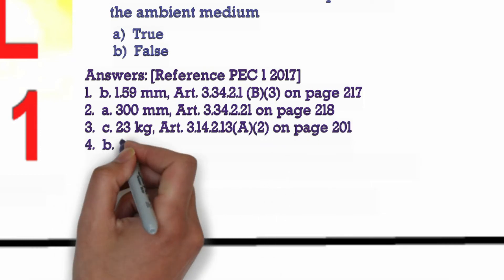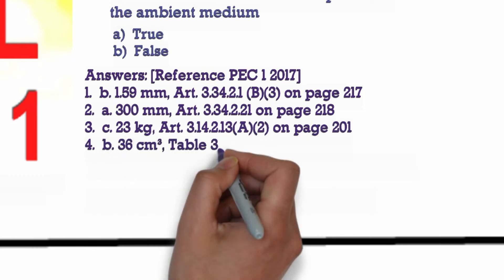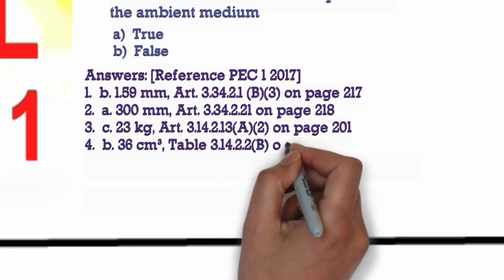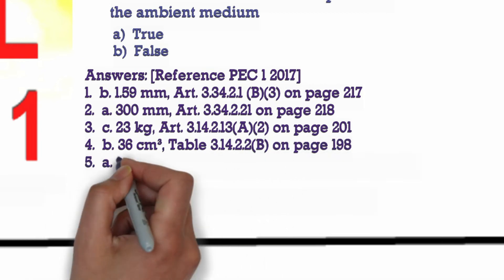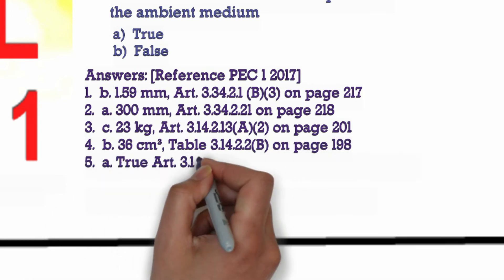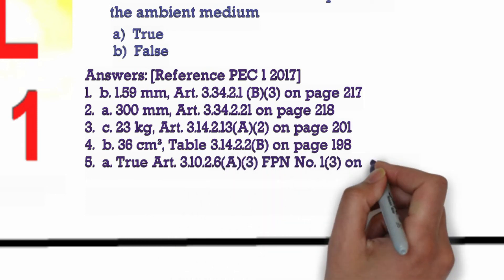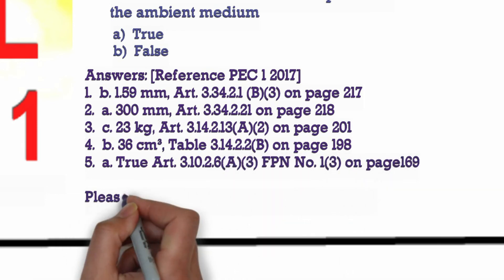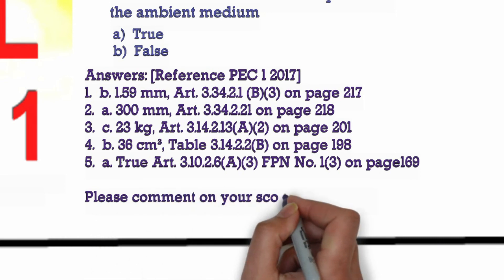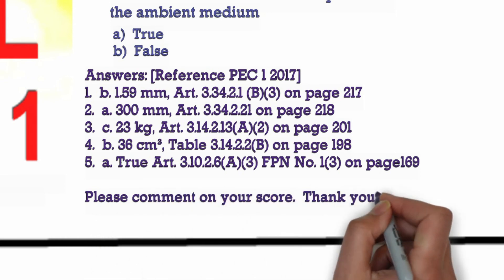5. A. True, Article 3.10.2.6(A)(3), FPN Number 1(3) on page 169. Please comment on your score. Thank you.